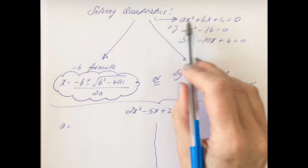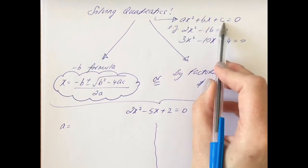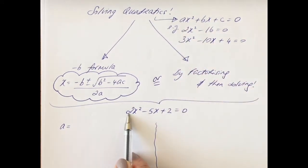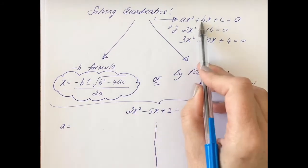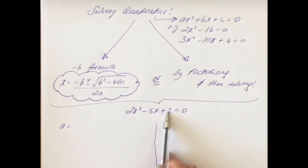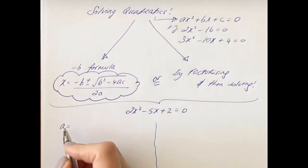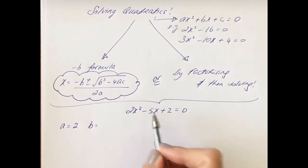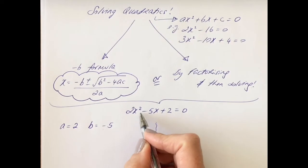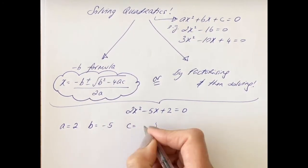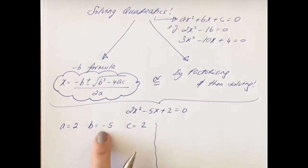If you look at this standard trinomial quadratic, the a is whatever is the number before the x squared, or the coefficient of x squared. The b is the coefficient of x, or the number before the x. And the c is the final constant. So a in this case is 2. B in this case is minus 5 — be careful, a lot of people leave out the sign, the sign to the left is hugely important. And c in this case is 2. Once you've identified your a, b, and c, we're now going to sub it into the formula.